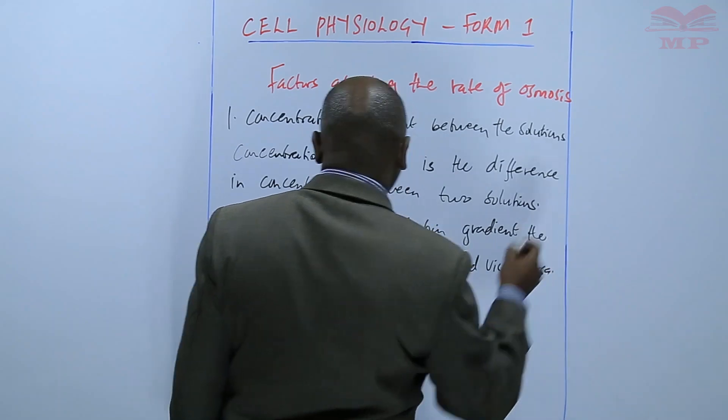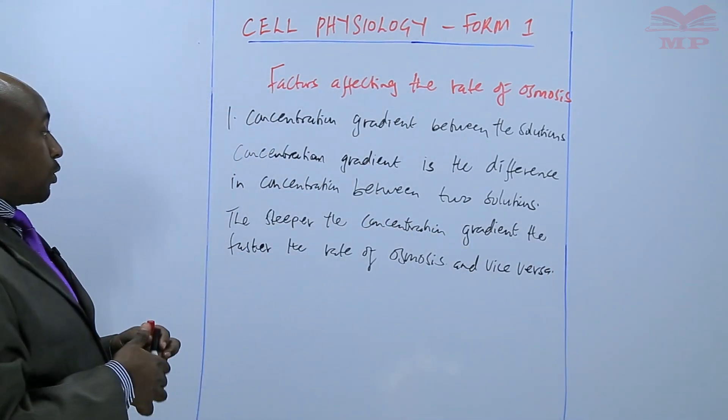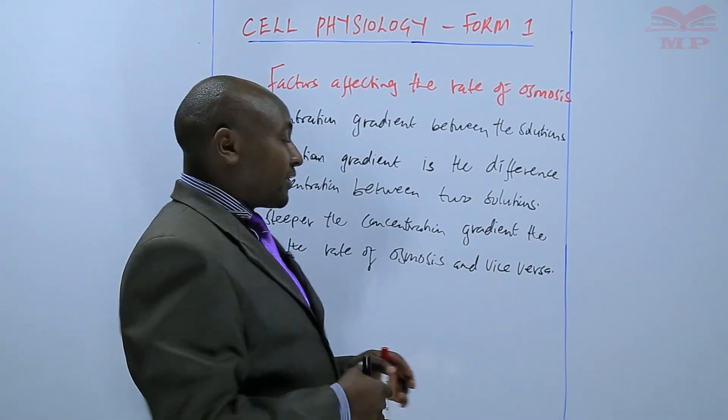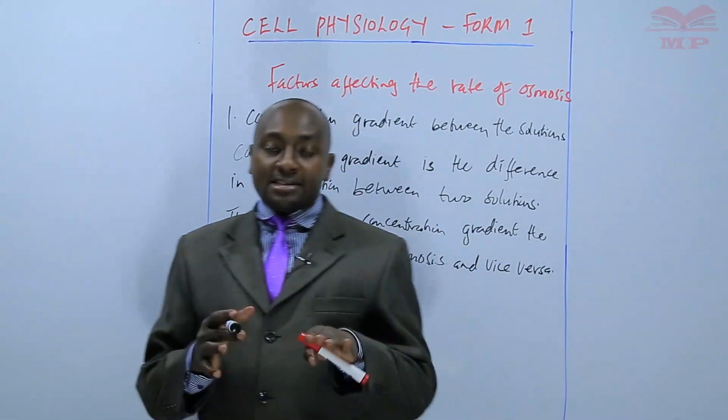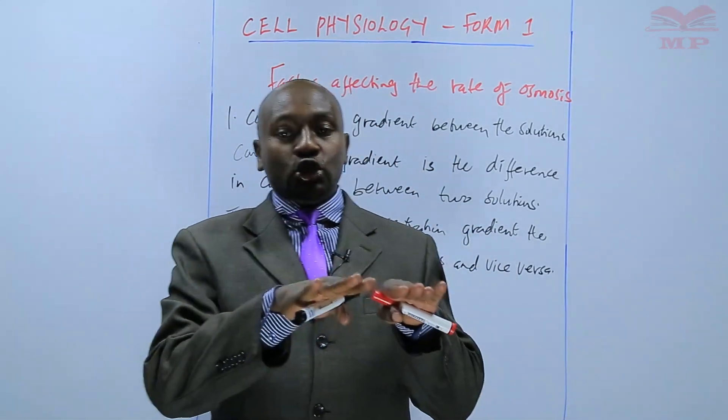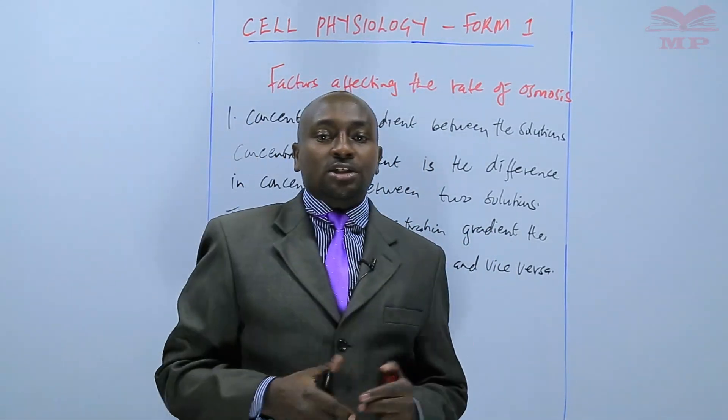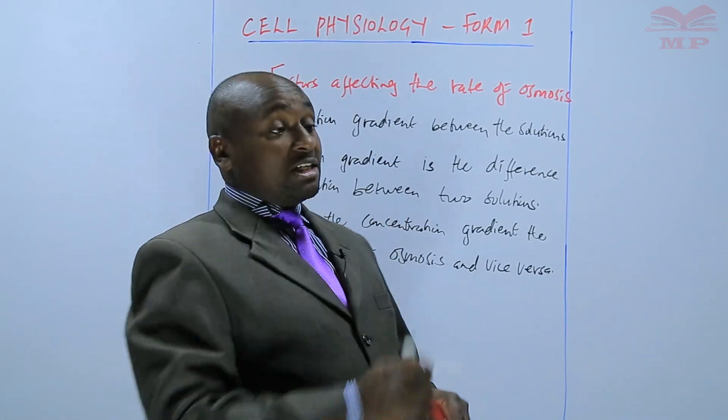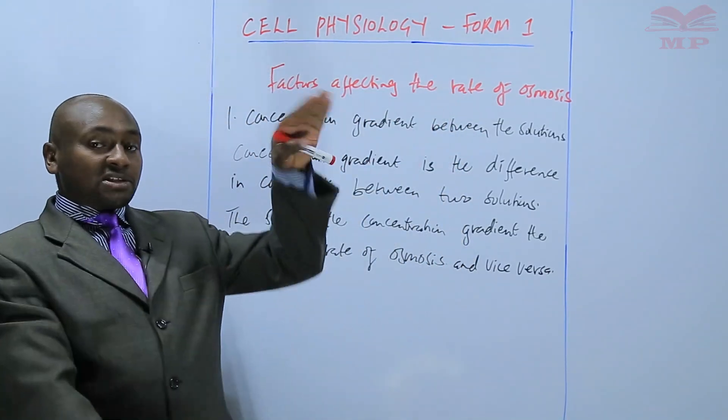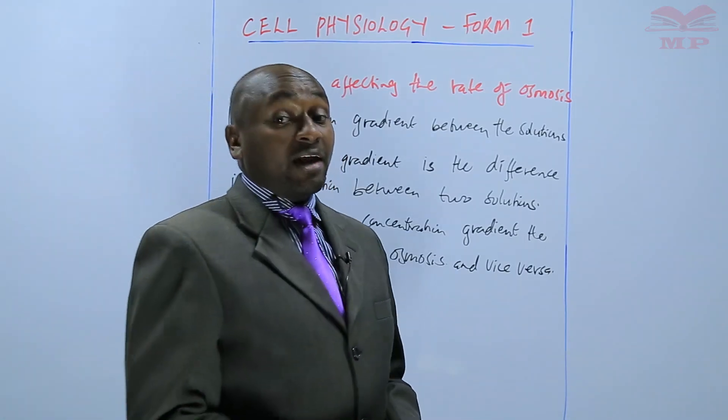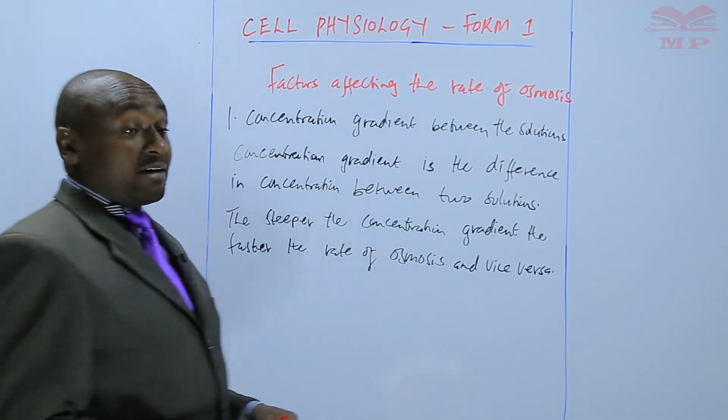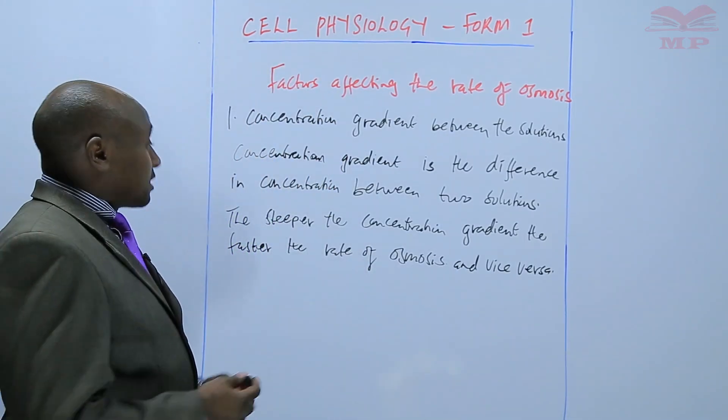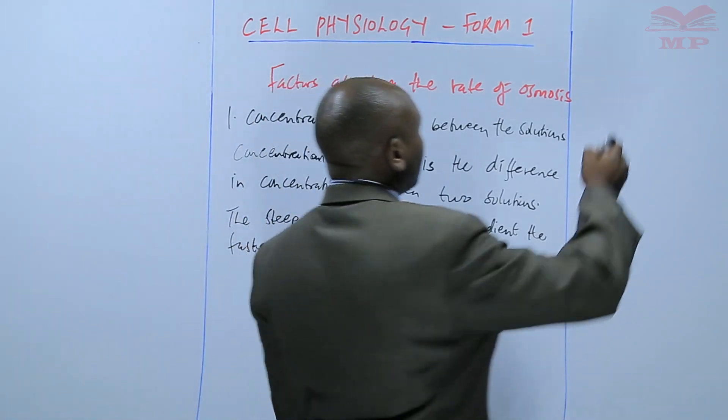So that means that if the concentration gradient is less steep, that means the solutions have almost the same concentration, then the rate of osmosis will be slow. But if there is a very steep difference between the two solutions, then the rate of osmosis will be faster.